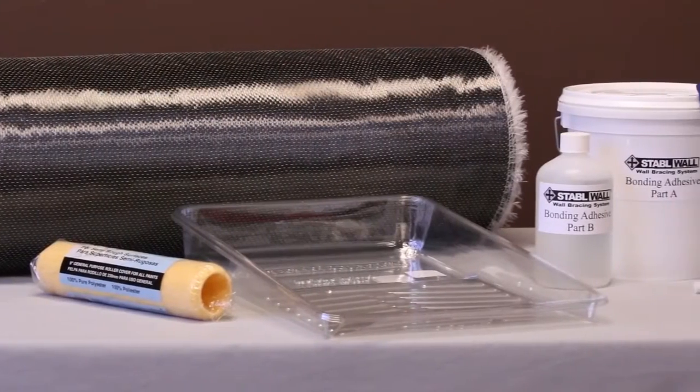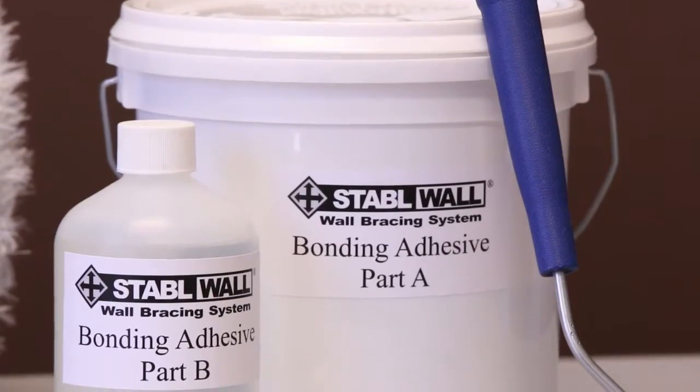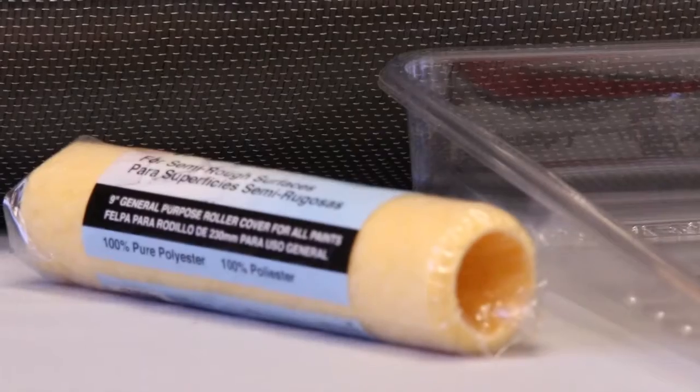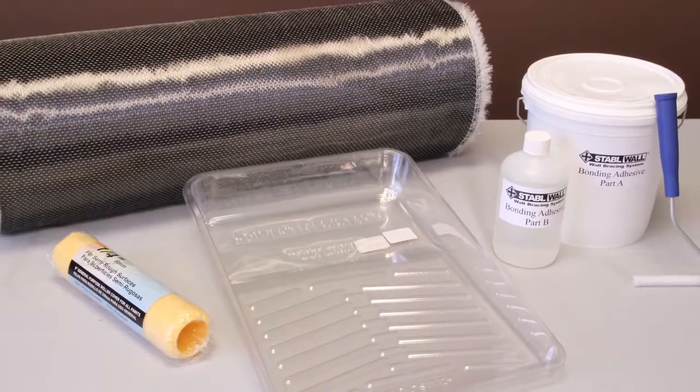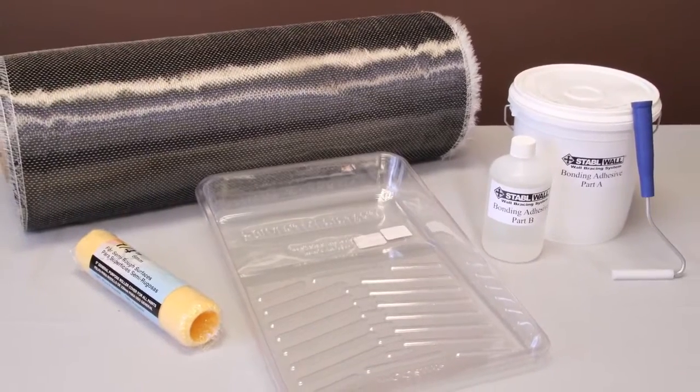The last group consists of your bonding adhesive. Place the bonding adhesive parts A and B together with the other quarter-inch nap roller cover and disposable roller pan insert, the carbon fiber, and the ribbed roller.